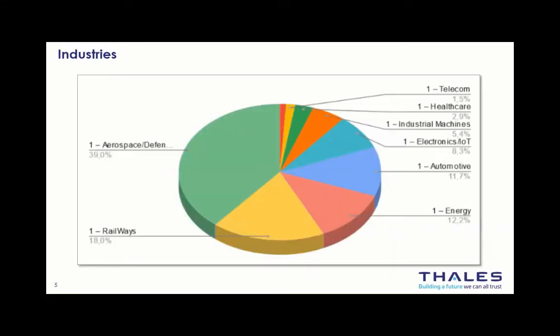Regarding the kinds of industries using Capella, not surprisingly, the industrial footprint follows the domains where systems engineering practices are most applied. We see a lot of aerospace and defense, railways, energy, and automotive industries, where very complex systems are developed and safety and other critical concerns are of paramount importance. We already see some companies in domains such as healthcare, Internet of Things, and telecom — great news as these companies introduce breakthrough innovations and are increasingly concerned with aspects such as cybersecurity, which demands clear understanding and sharing of system architectures.